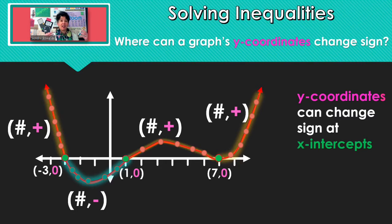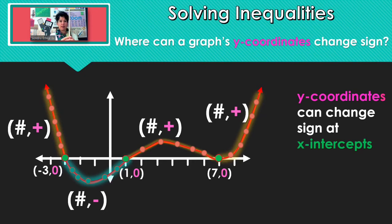Another place that your graph can have your points change sign for the y part of the coordinate is at a vertical asymptote. I don't have that one in this graph, but let's say that I have a vertical asymptote. As you come into this graph and it starts to skyrocket following that vertical asymptote—